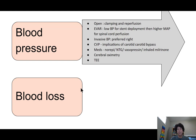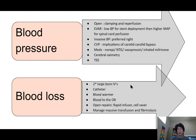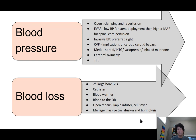Blood loss is really more of an issue for our open cases — on our endo cases, blood loss is not that significant. For our open cases we would have two large IVs, likely a MAC or a Cordis in the neck. We would have a blood warmer, and for the open repairs, rapid infusers and cell savers. We would get blood up to the OR. All of these patients would have a catheter, and we would be preparing to manage massive transfusion and likely fibrinolysis in our open cases.